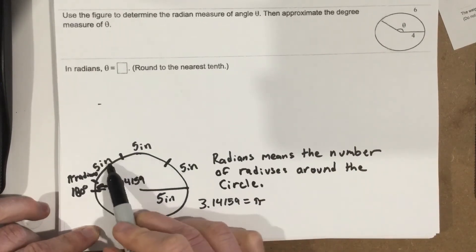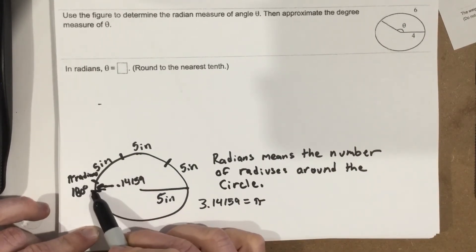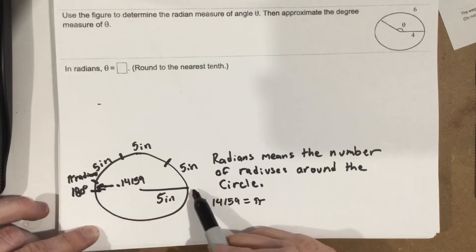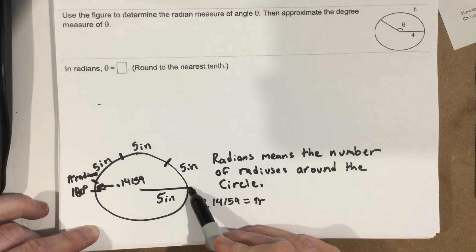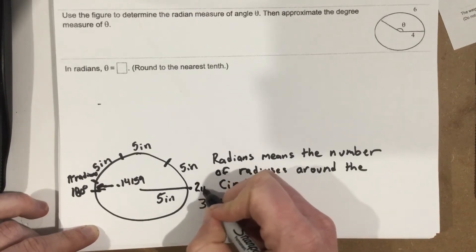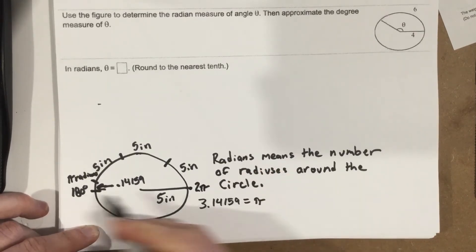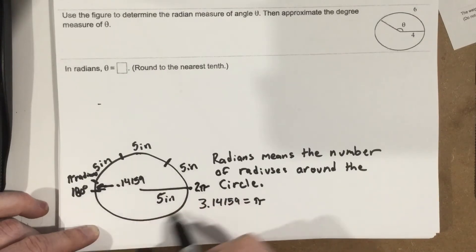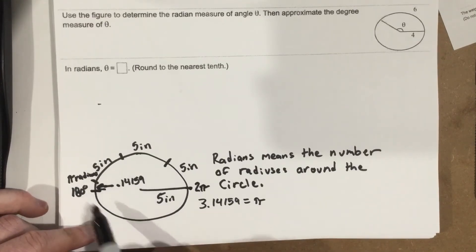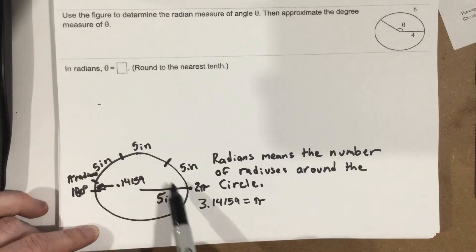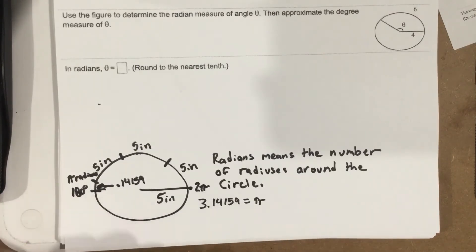So 1, 2, 3.14 takes you to right there. 6.28 radiuses take you to 360 degrees. That's actually 2 pi radians, because it's double pi, right? 1 pi, then 2 pi. It doesn't matter what the radius is. The radius can be any number. This is always the case. It's always pi radians to here and then 2 pi radians to there. So pi radiuses, 2 pi radiuses to there.